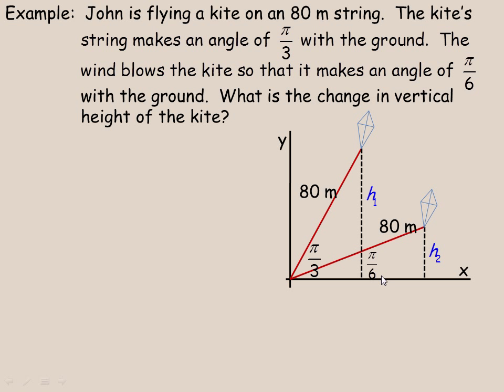And it changes so the angle is now π/6. And we're asked to, what is the change in vertical height of the two kites? H1 represents the initial vertical height. H2 the new height after the wind blows the kite lower. And then we're asked to, what's the change between H1 and H2? In other words, how much lower has it gone?